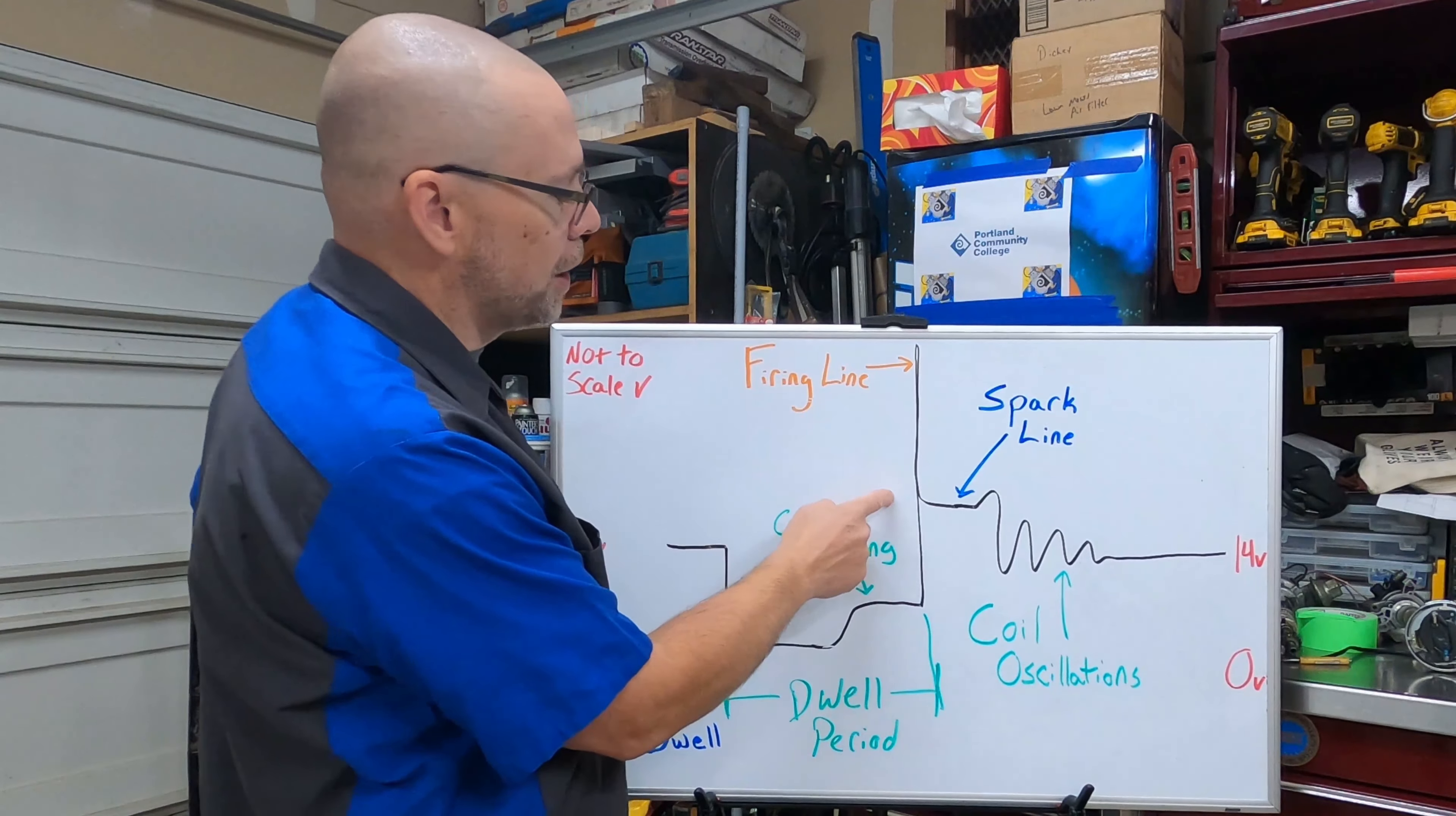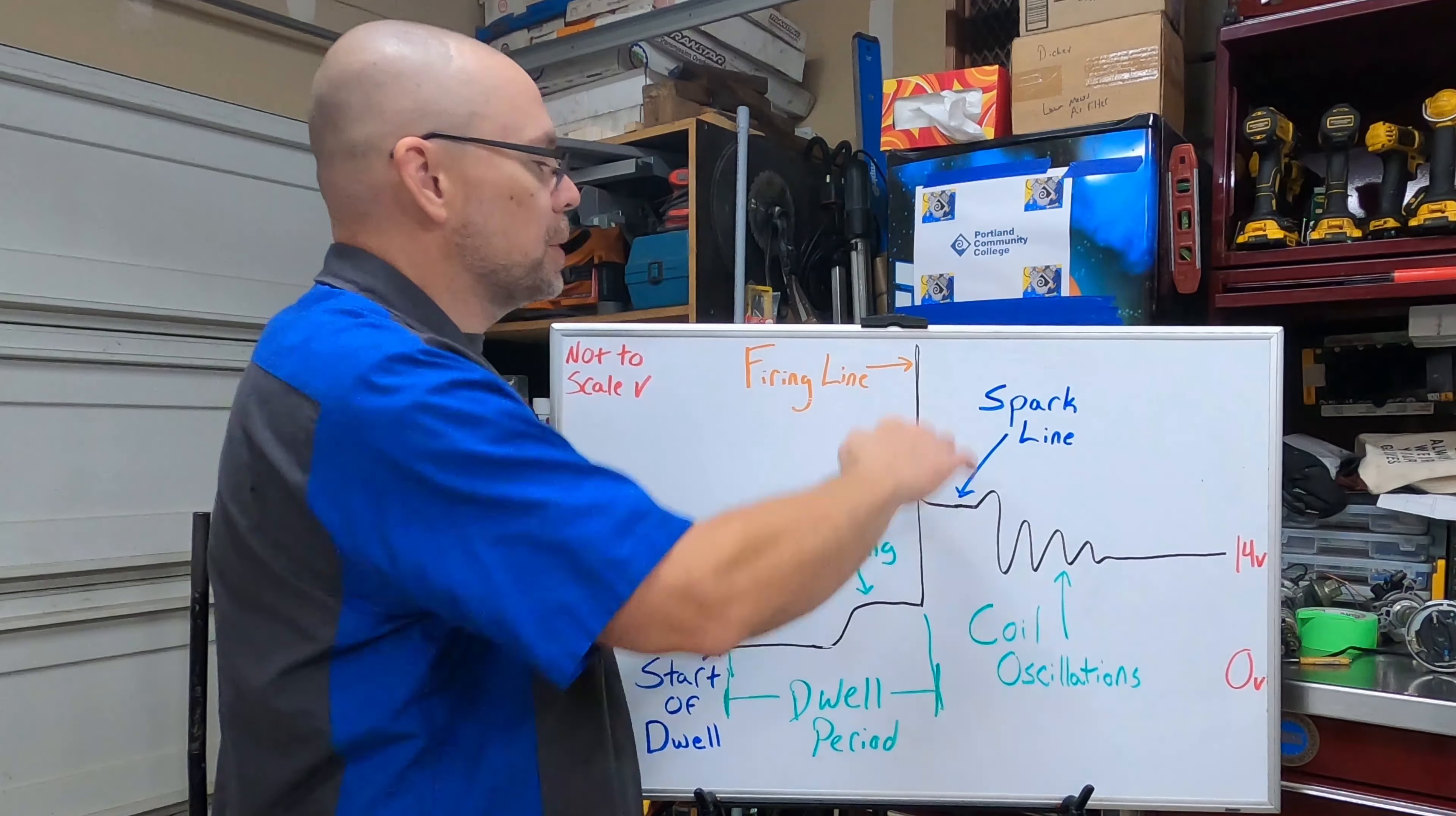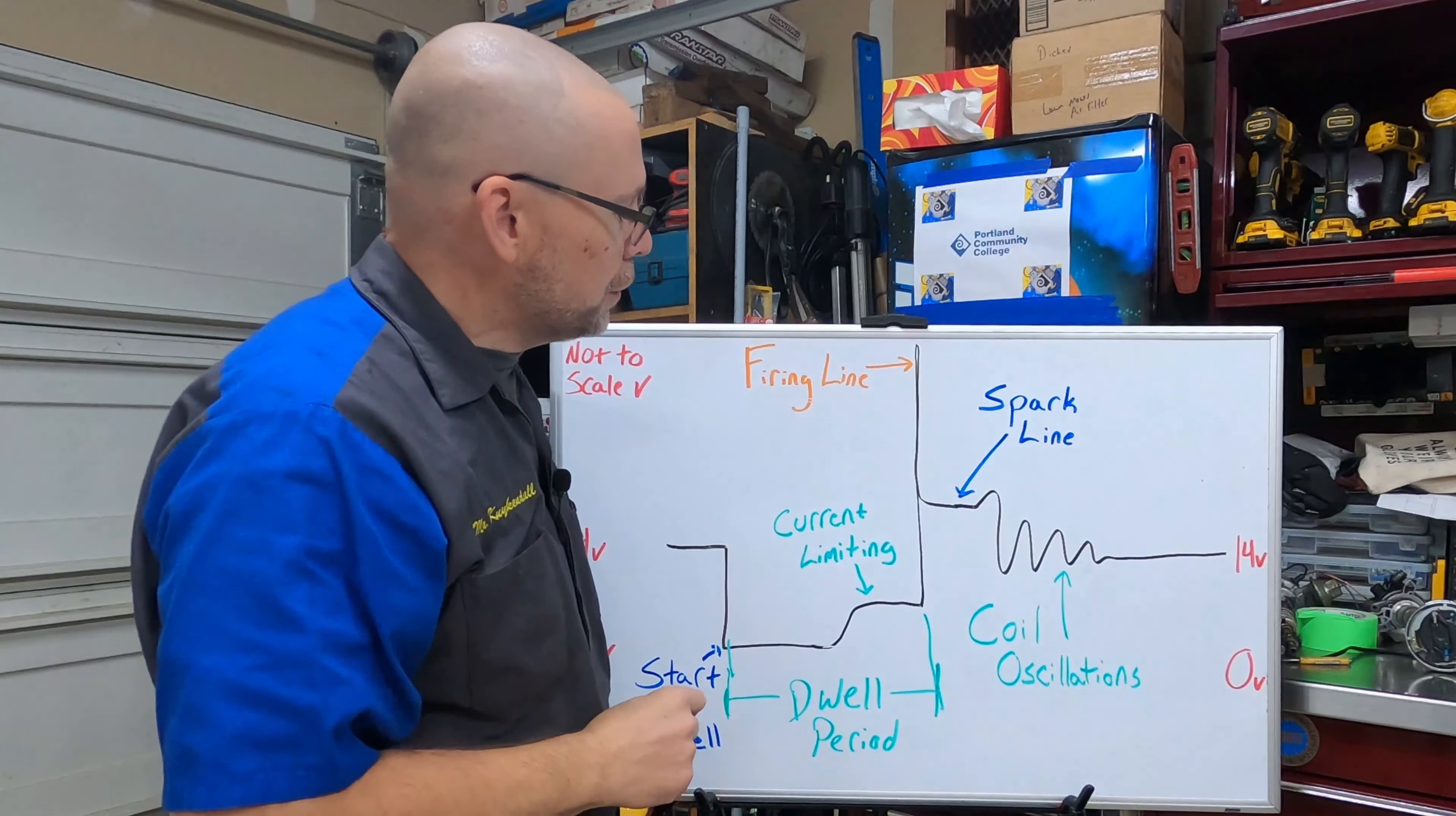When we're viewing secondary you will see what the maximum coil output is. We can't do that on primary, we're going to get around three to four hundred volts at the top of this on primary. If we had an open spark plug where we're looking at secondary this line would be way higher. If we have something that causes lower than normal resistance like a spark plug that got dropped, you'll see this line come down because it doesn't take as much energy to jump all the gaps.